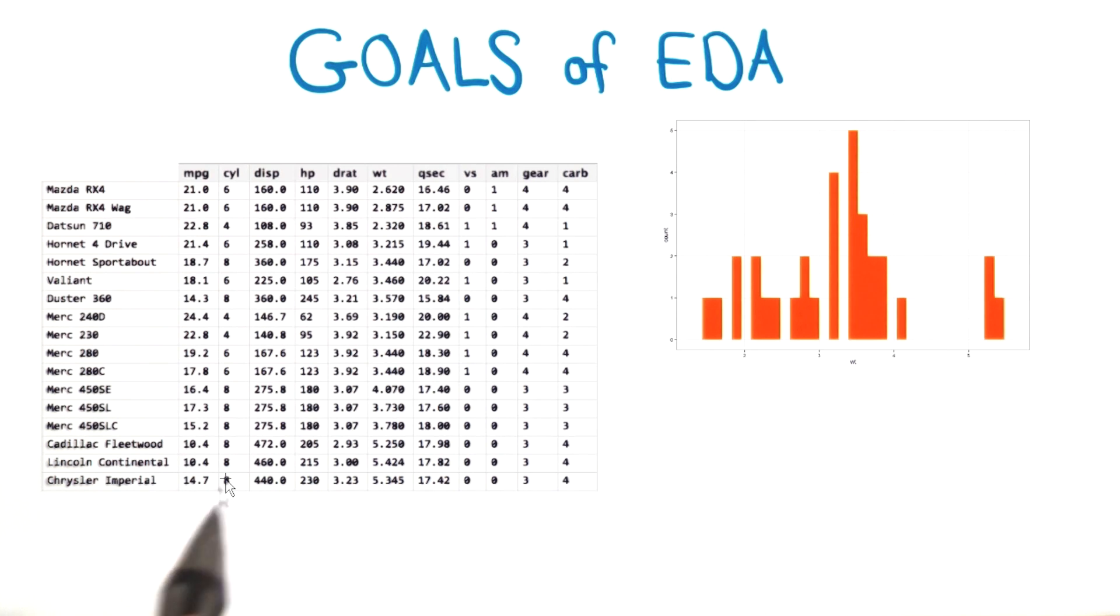We might create histograms, which you'll see later in lesson three. This histogram shows the distribution of weights for all the cars. Or we might examine correlations between variables, like miles per gallon and horsepower. In that case, we want to create a scatterplot. We'll examine these in lesson four.